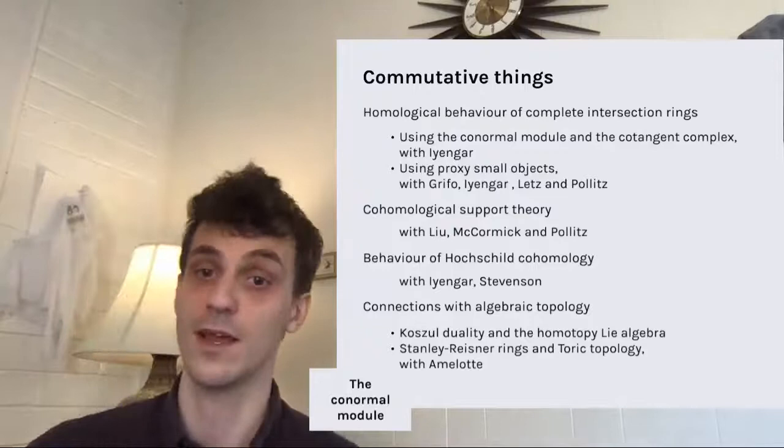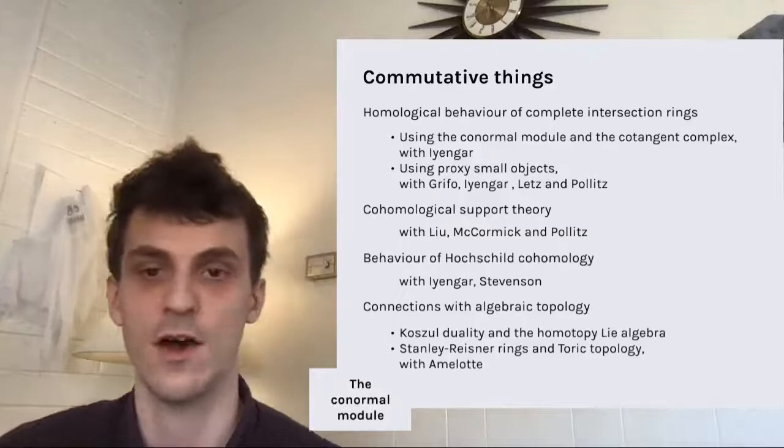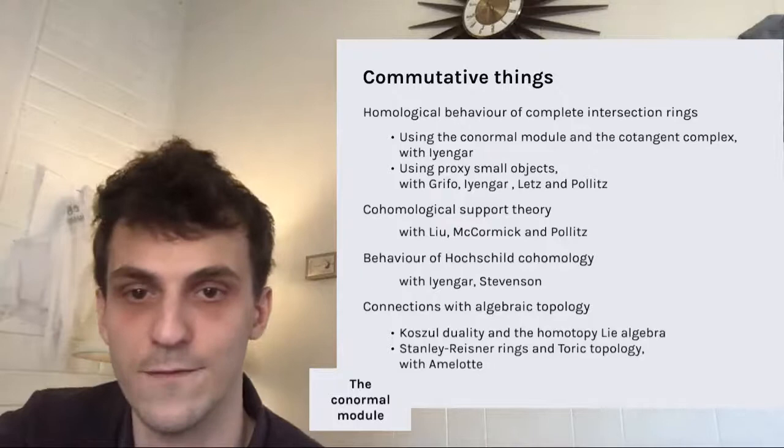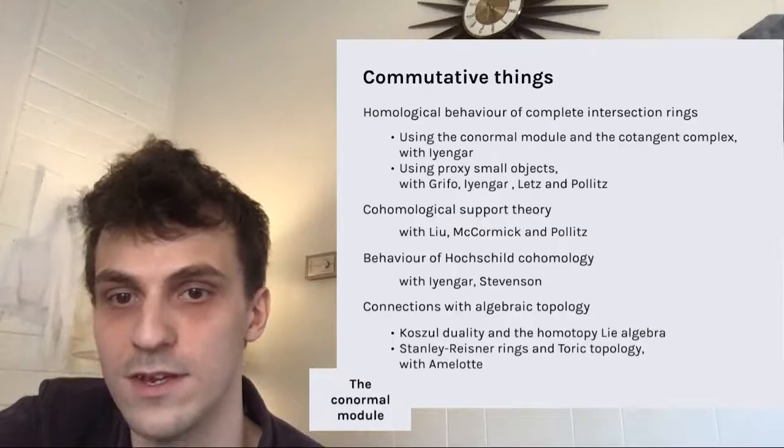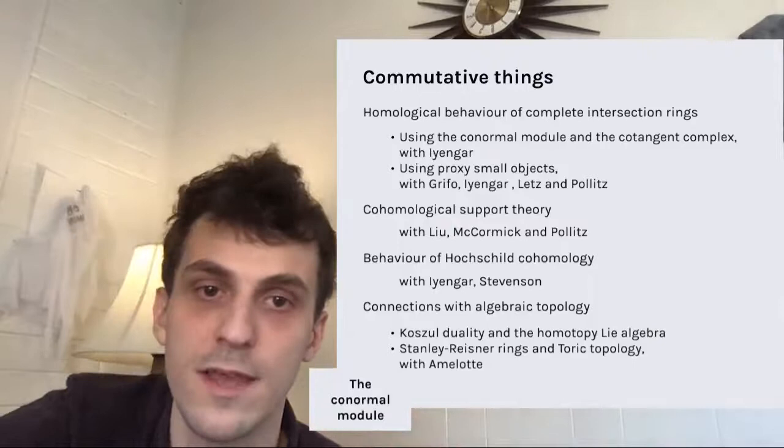I really like thinking about complete intersections recently. It turns out complete intersections have this incredibly pristine homological behavior. The derived category of a complete intersection ring is a really lovely place to live. I have two main approaches: the first is probably a bit more classical — there's the conormal module and the cotangent complex, and you can characterize the complete intersection property in terms of those.